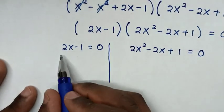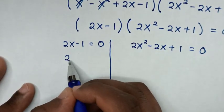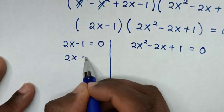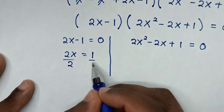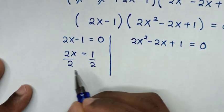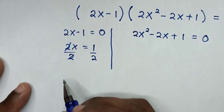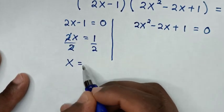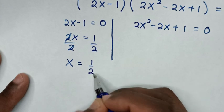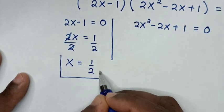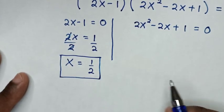For the first solution, we take negative 1 to the right side: 2x equals 1, then divide both sides by 2. So x equals 1 over 2. This is the first value of x.